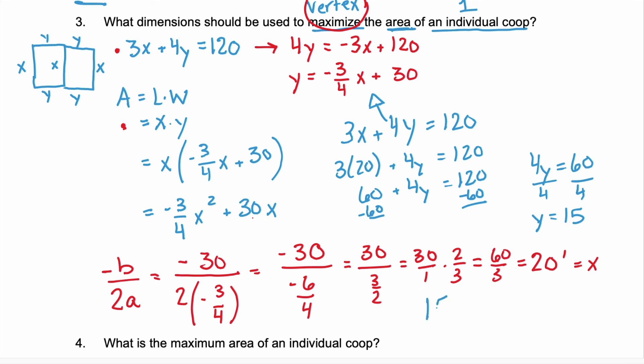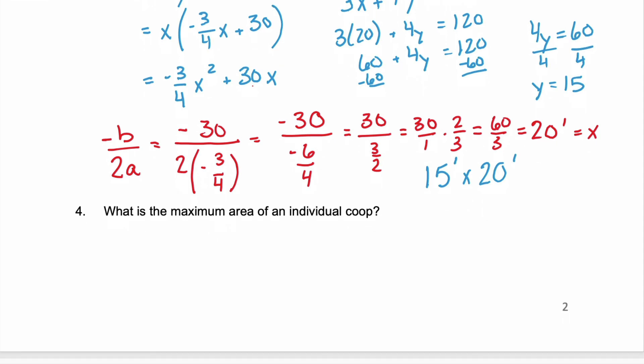So we know we need a chicken coop that is 15 feet by 20 feet. And that brings us to our last question. Knowing the dimensions 15 feet by 20 feet, what is the maximum area of an individual coop? Well, we could plug in our x-value for our vertex back into the original quadratic we had to find it. Or we can use what we know about area, length times width. And we know our chicken coop is 15 by 20. So we know that our chicken coop has a maximum area of 300 feet squared.